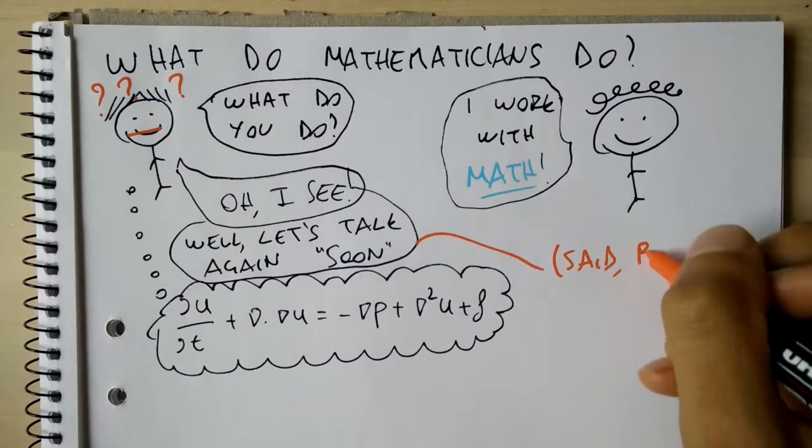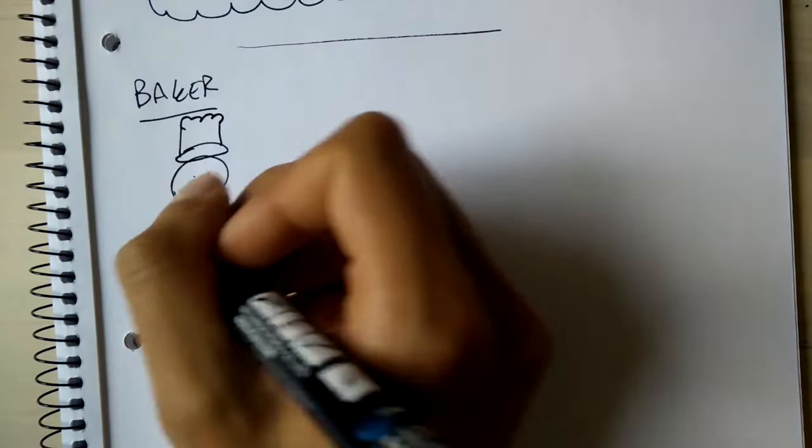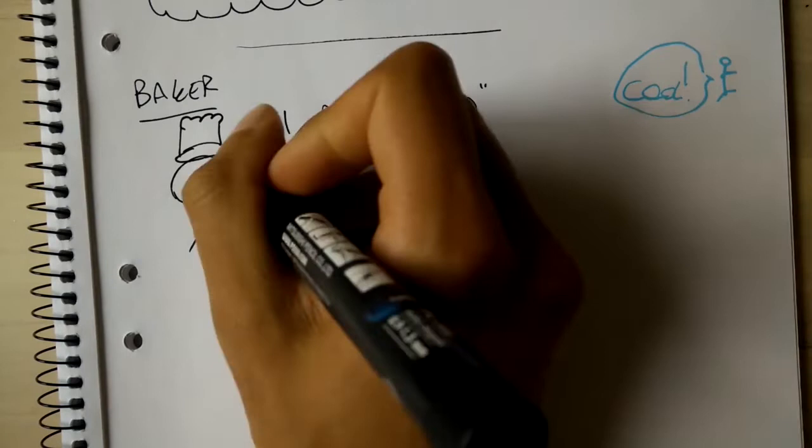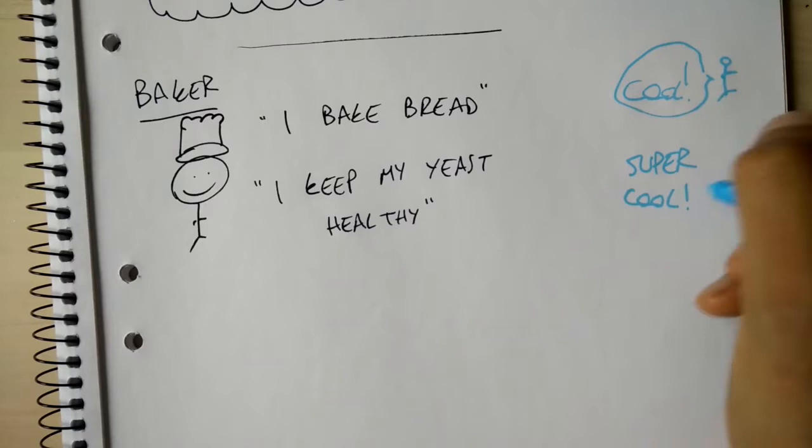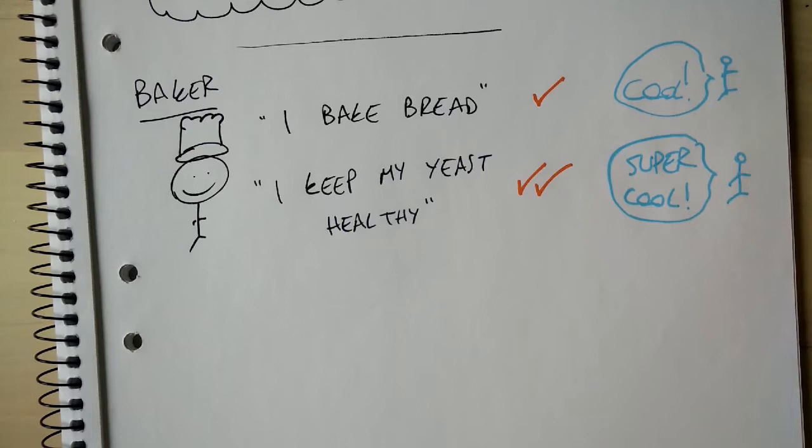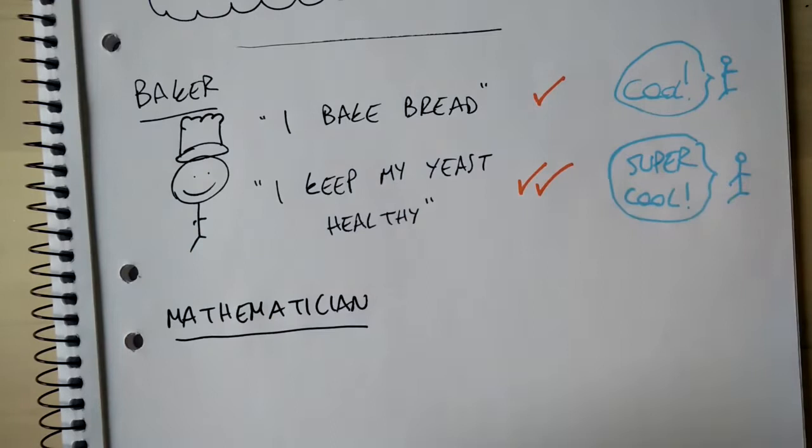We often think that math people give evasive or vague answers over their daily lives, but they're not necessarily vaguer than what a baker would say. I mean, saying that you bake bread is for sure understandable by a broad audience, we all know what bread is, but what is it that they actually do for hours every day? You can get a less evasive answer, such as I keep my yeast healthy, but there is still a lot of detail missing there as well.